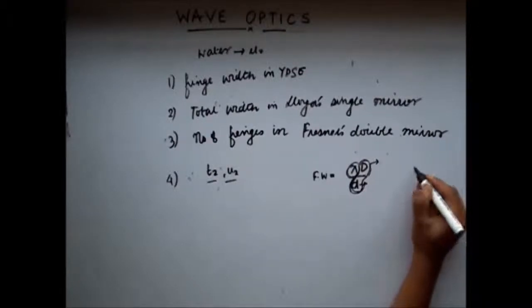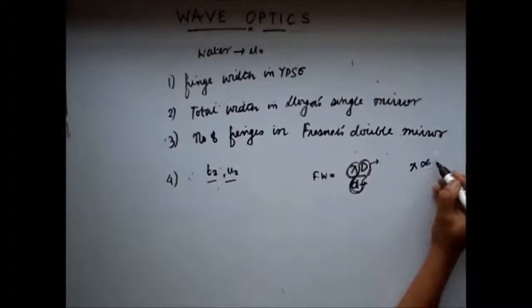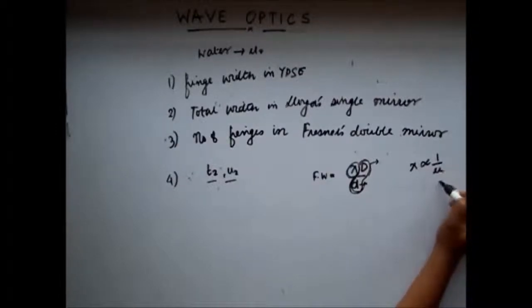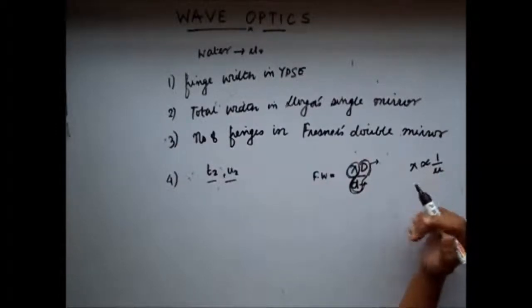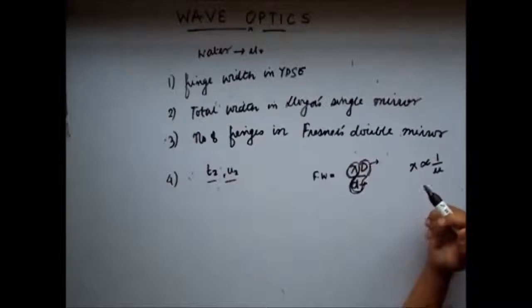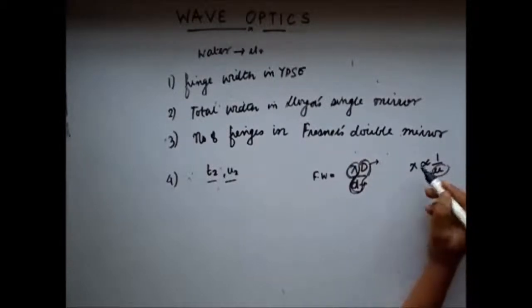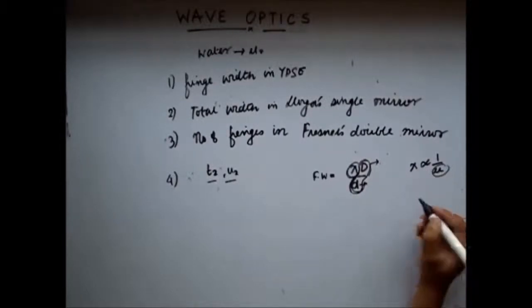Lambda is proportional to 1 by refractive index, mu. Because when mu, or the refractive medium, is a denser medium, then the velocity and the wavelength both decrease.